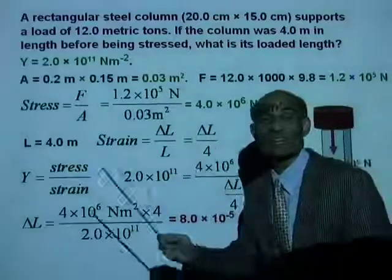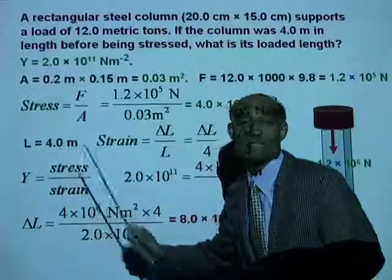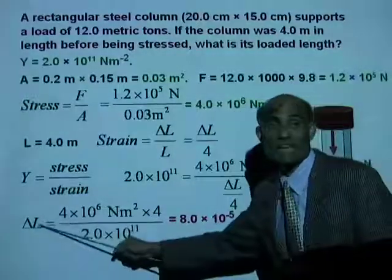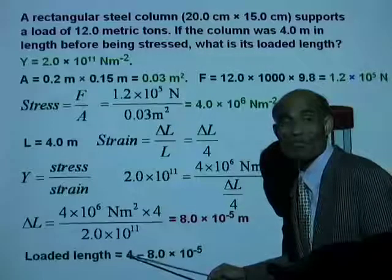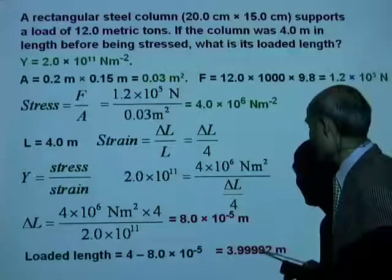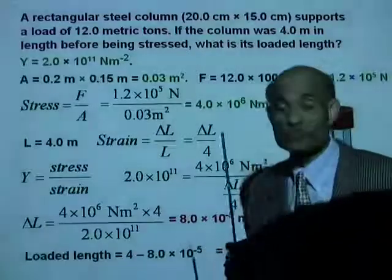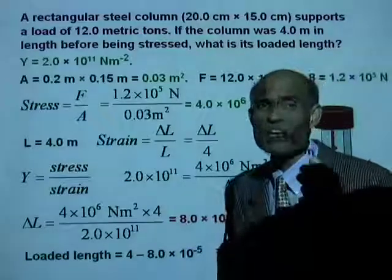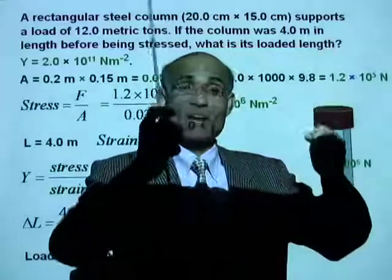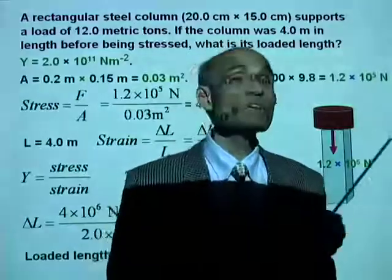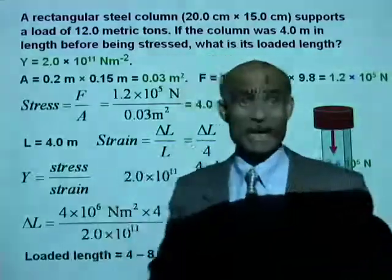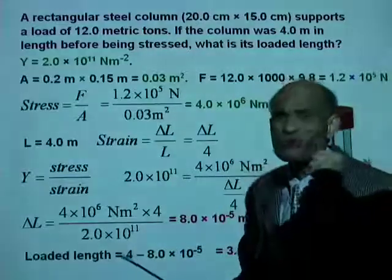The change in length is 8 times 10 to the negative 5 meters. The original length is 4 meters. Therefore, the loaded length is L minus delta L: 4 minus 8 times 10 to the negative 5, which equals 3.99992 meters. The change in length is so very small that in many cases it is undetectable.